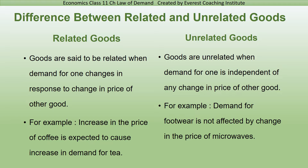For example, an increase in the price of coffee is expected to cause an increase in the demand for tea. Tea and coffee are substitute goods — if the price of coffee increases, demand for tea will increase because consumers switch from coffee to tea.